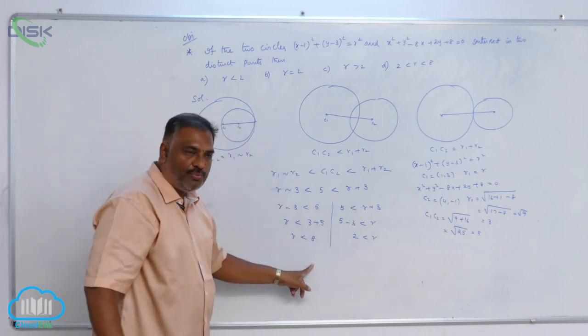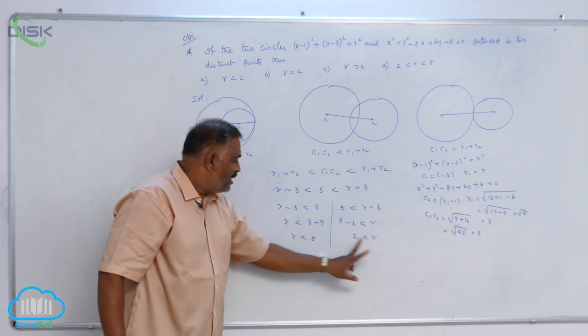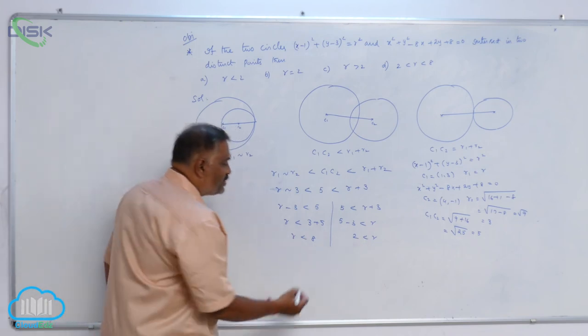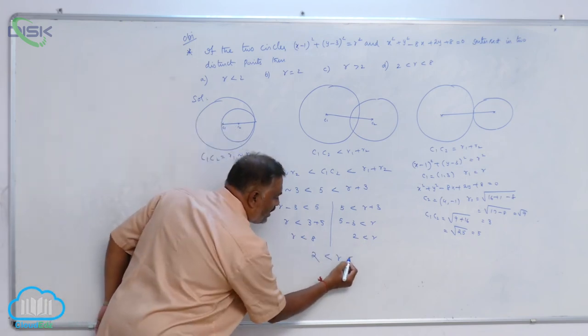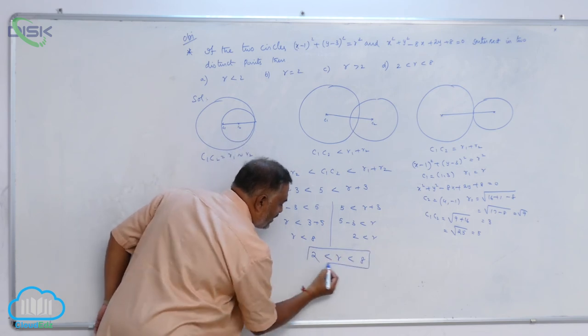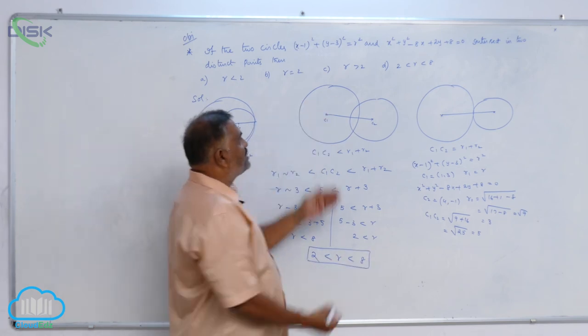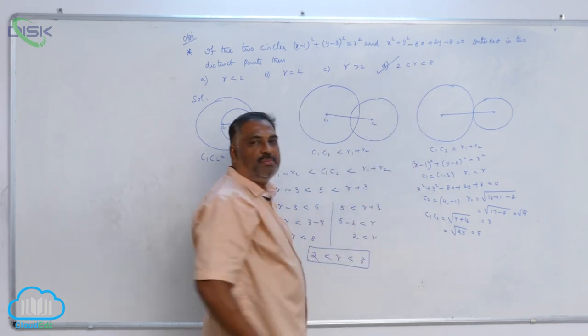Now combine these two: 2 is less than R, but R is less than 8. So together, 2 less than R less than 8. This is the required answer. From your options, the fourth option is 100% correct.